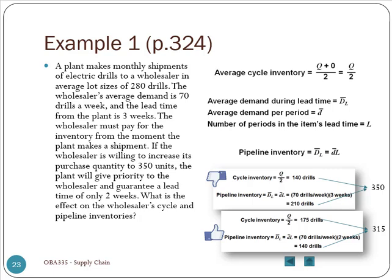How much inventory does this company hold for the drills? There are two kinds: cycle inventory and pipeline inventory. If they order 280 drills every time, the cycle inventory is half of 280, which is 140. The pipeline inventory is the multiplication between average demand per week, 70 drills, multiplied by the lead time, three weeks, so they have 210 drills as pipeline inventory. Combined, they hold 350 units of drills on average.